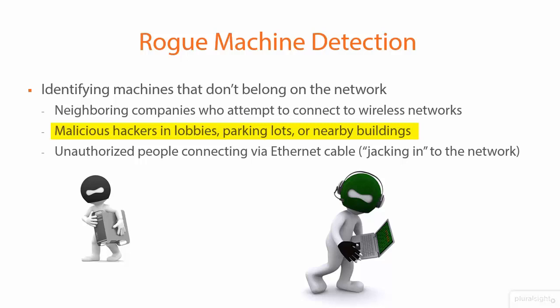We don't want people hopping onto our specific networks and perhaps accessing our data or trying to disrupt things in a malicious fashion. Additionally, unauthorized people connecting via ethernet — in other words, jacking into the network. If they have their own ethernet cable, or they come sit at a desk and see a spare ethernet cable, if they plug in and we have no rogue machine detection or no method to shut them down, they're going to get an IP address.